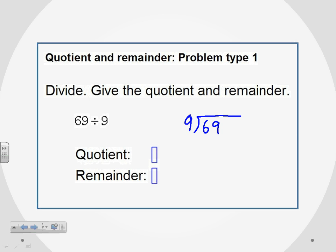Then we have to see how many times 9 goes into 69. We start off with the first digit, 9 into 6. 9 doesn't go into 6, so I have to look at the first two digits, 69.